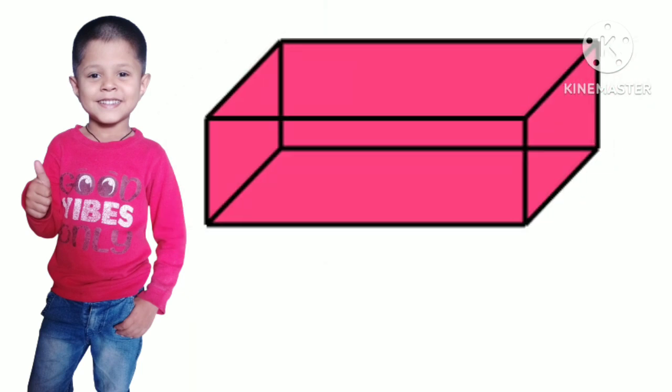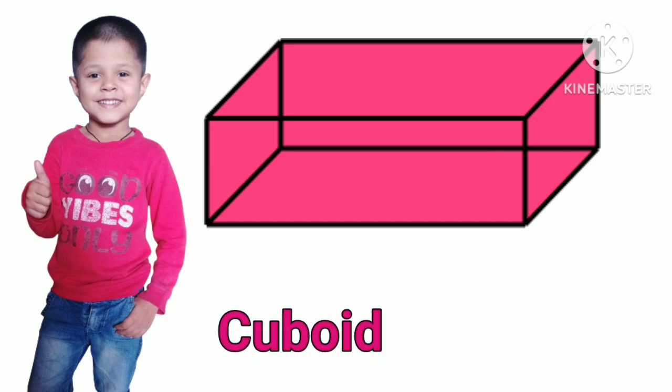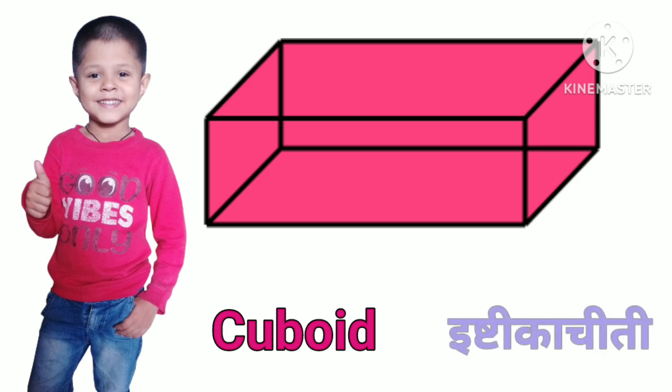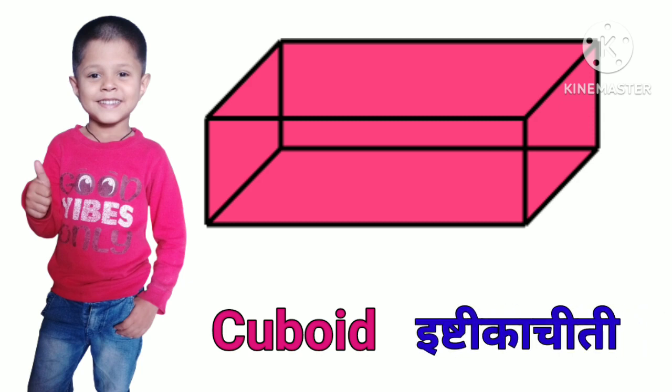Cuboid. C-U-B-O-I-D. Cuboid means Ishtikachiti.